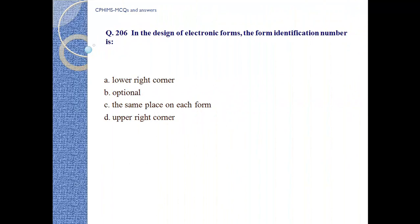Question number 206. In design of electronic forms, the form or identification number is: A. Lower right corner, B. Optional, C. The same place on each form, D. Upper right corner. Answer C: The same place on each form.